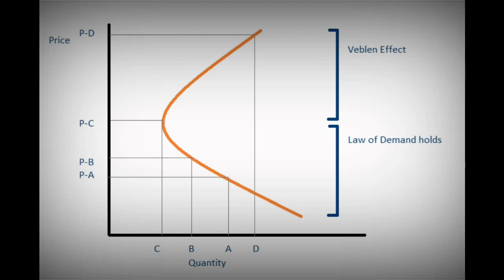However, for prices beyond PC, the Veblen effect comes into play and dominates over the law of demand. As the price rises from PC to PD, demand increases from C to D. For all prices above this, the law of demand does not hold and there exists a positive relationship between the price of a commodity and demand for the commodity. This is what is called the Veblen effect.